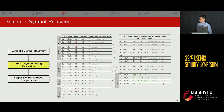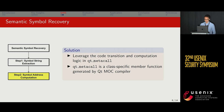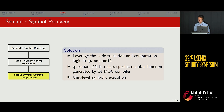The second main component of QtIE is semantic symbol recovery, where QtIE automatically parses the symbol table — such as the string table and metadata table — and leverages the code transition and computation logic within the Qt metacore function. To this end, QtIE uses a unit-level symbolic execution engine to compute it dynamically. For implementation details, please refer to our paper.